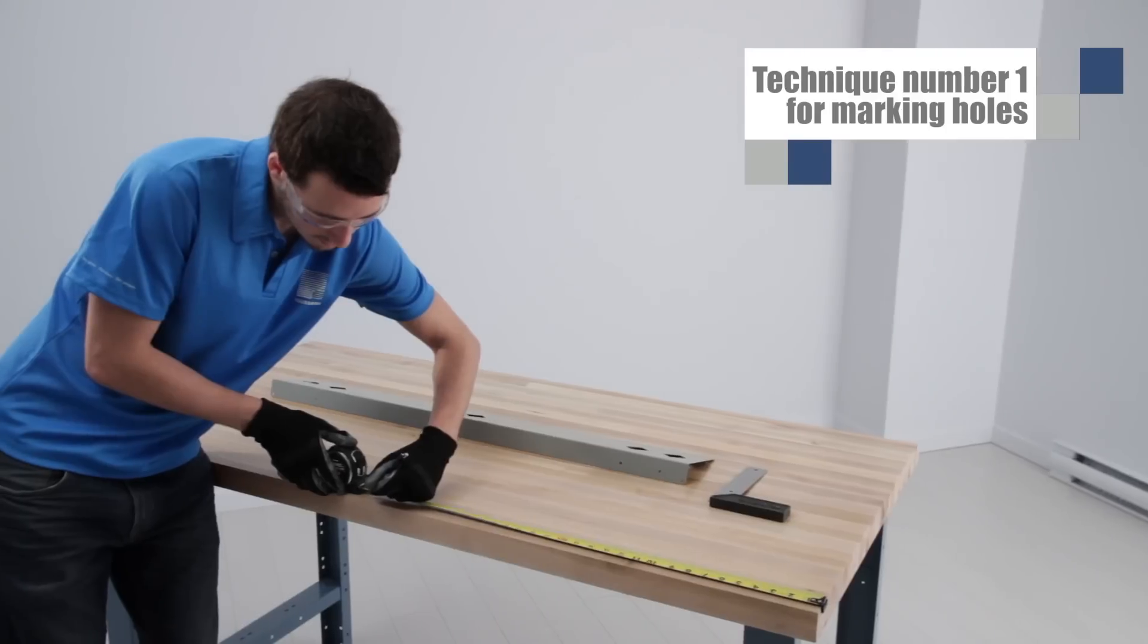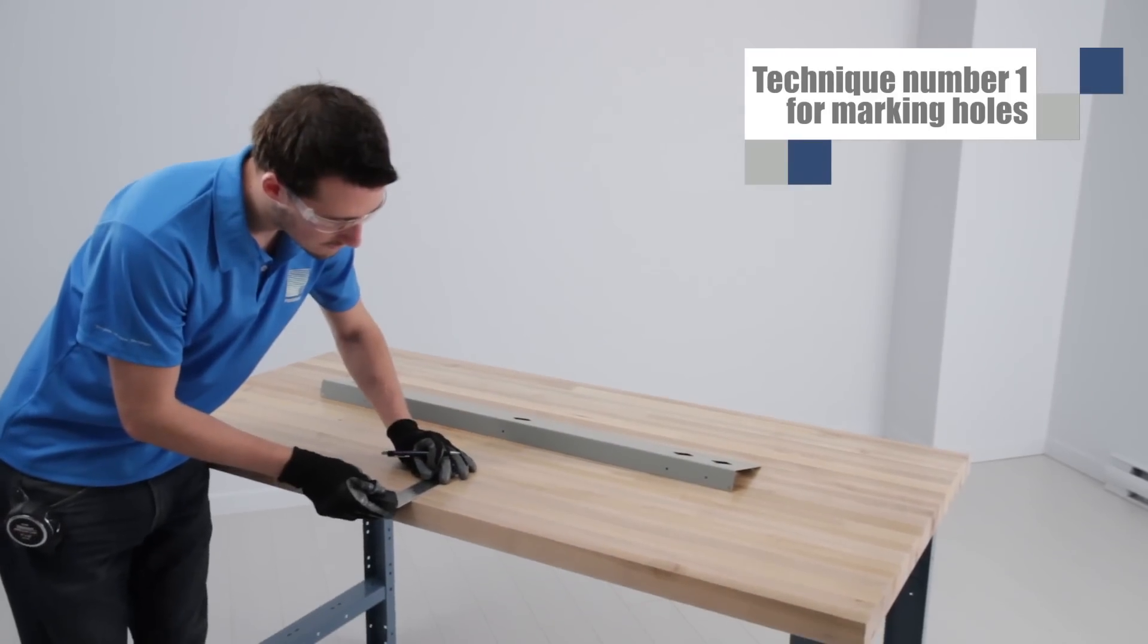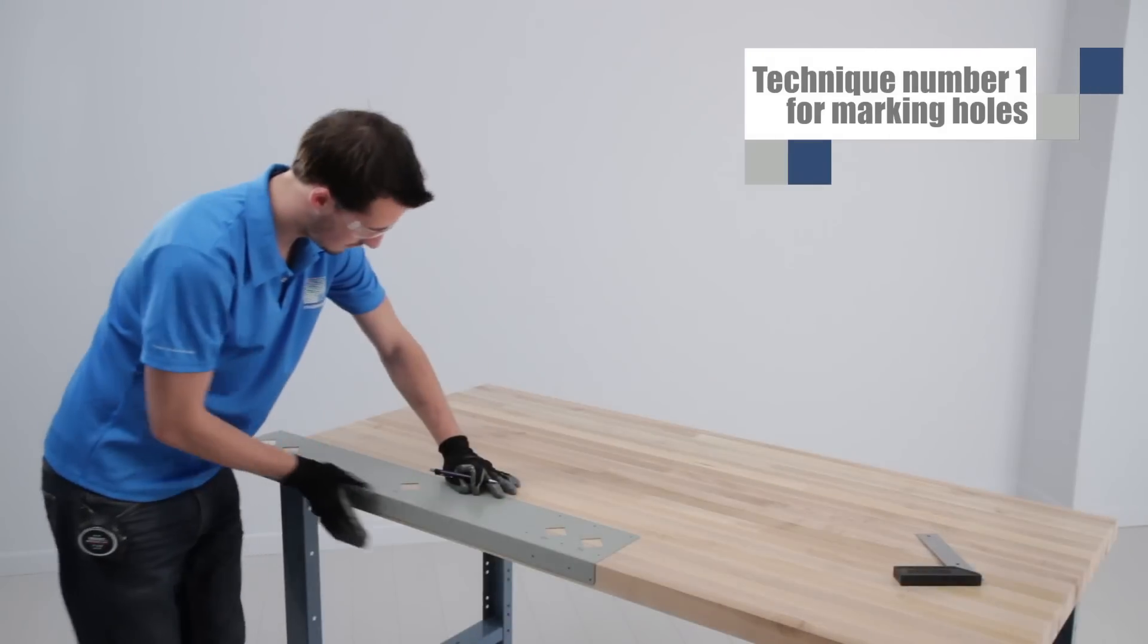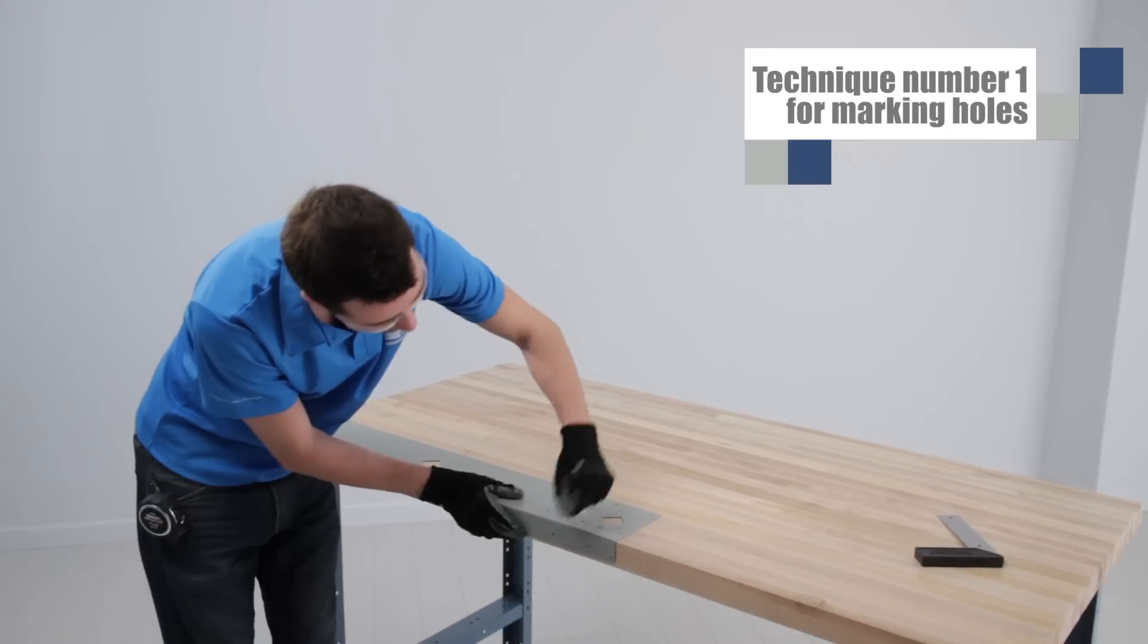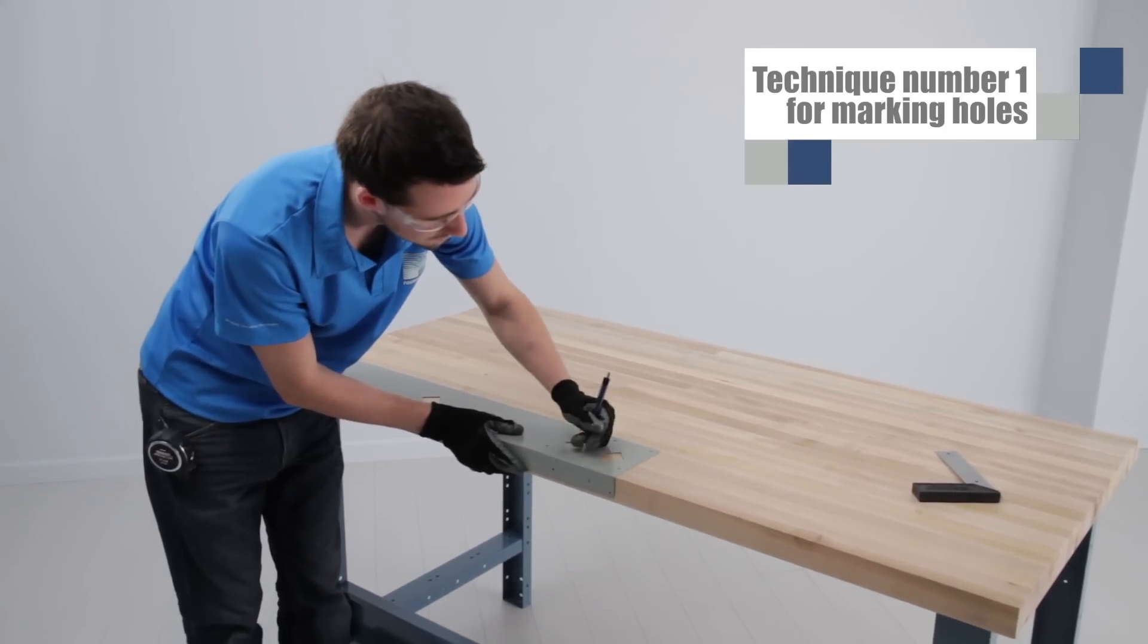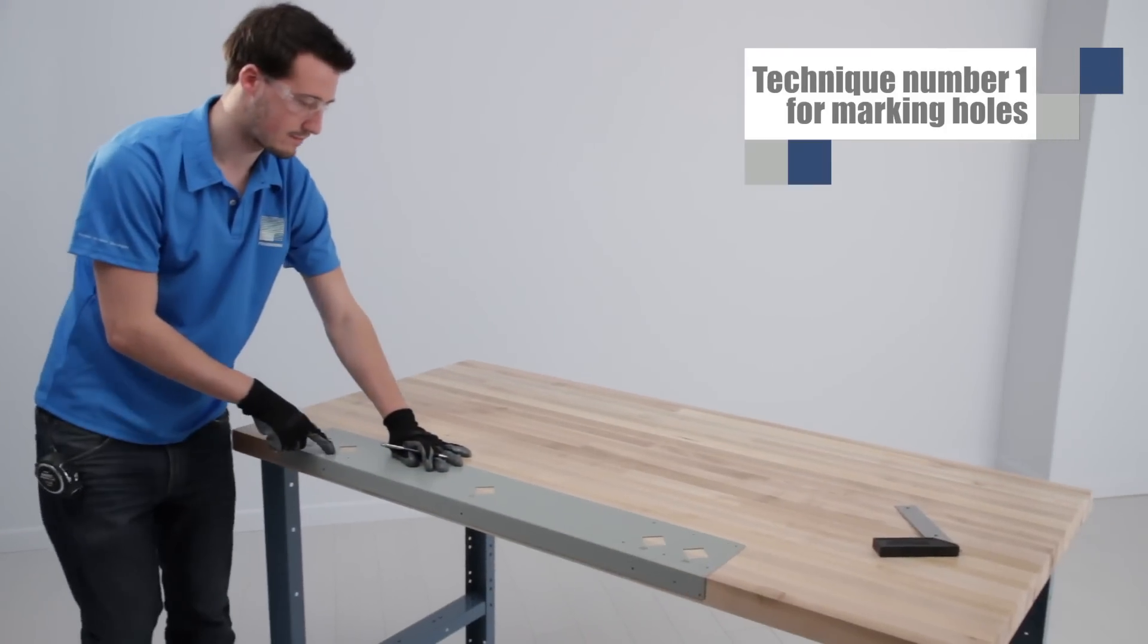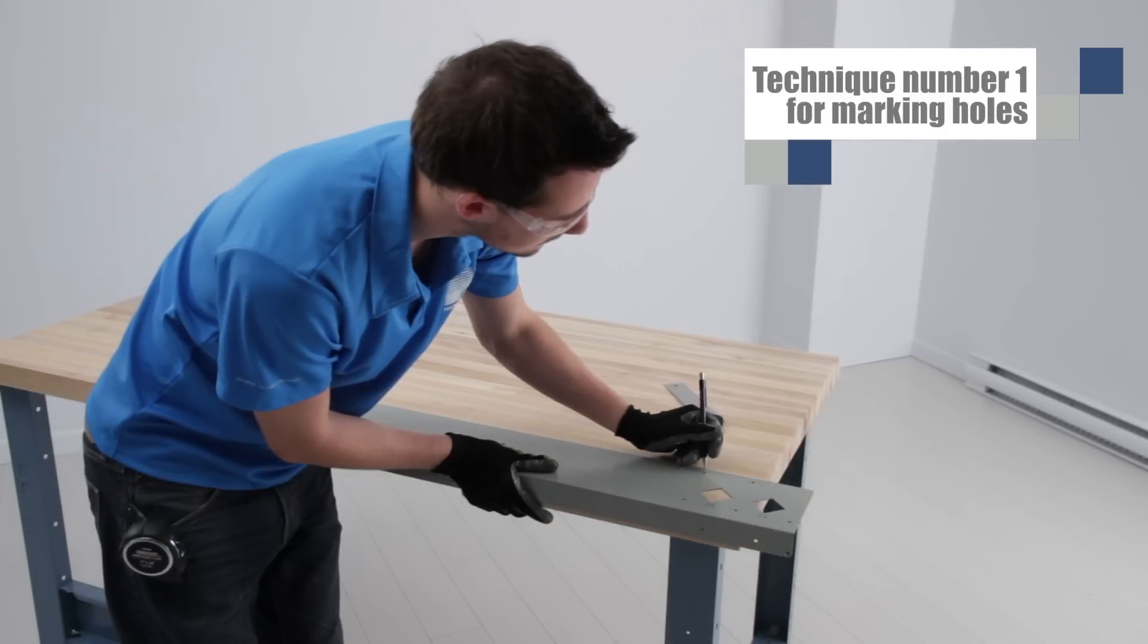This is why Rousseau created a template for all standard configurations. The first step consists of marking the center of the work table. Then using the optional template, simply make a mark for the holes that you need to drill according to the configuration you are using. For example, on the 60 inch wide work surface, we are installing a 56 inch wide double frame.